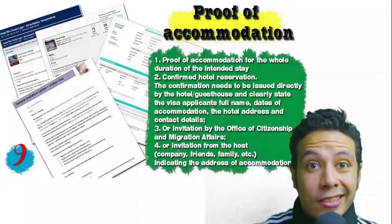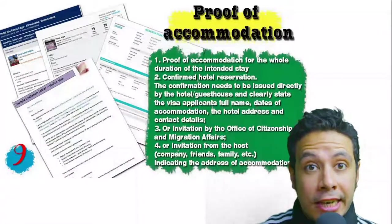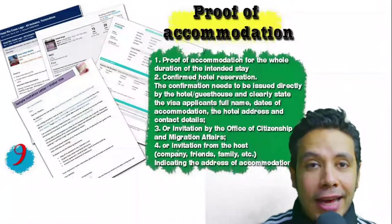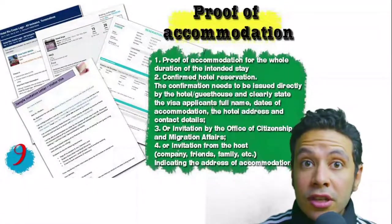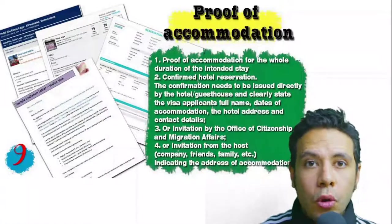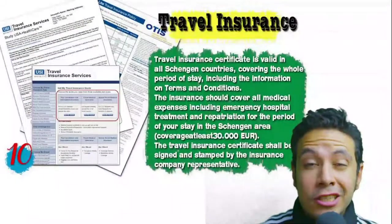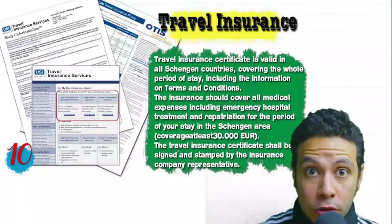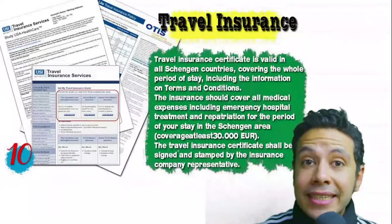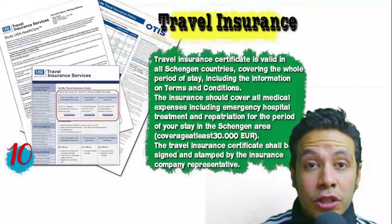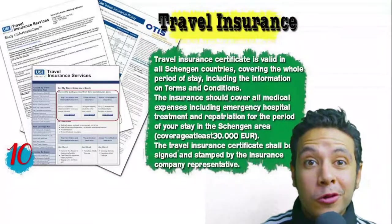You will also need proof of accommodation — a confirmed hotel reservation, an invitation from a host, or an invitation from an organization you are visiting. An initial booking is acceptable in most cases, but the hotel name, address, and contact number must be mentioned. If invited by a person, the invitation letter should be mailed directly to the embassy or submitted by you along with a copy of the inviting person's passport. Many countries, especially Schengen area countries, also require travel insurance with coverage of at least 30,000 euros.